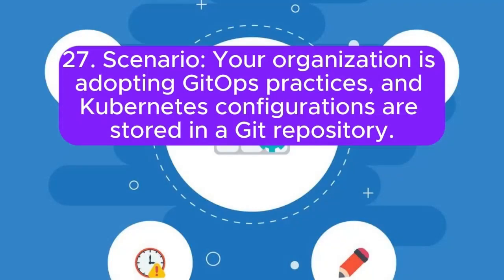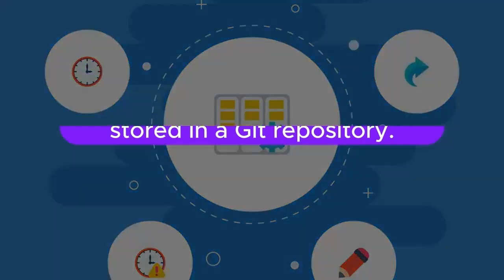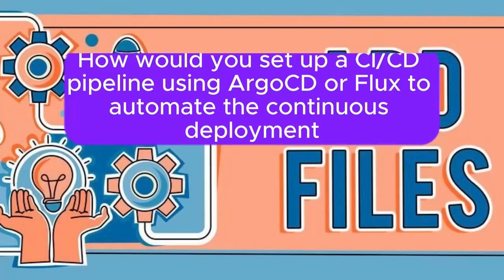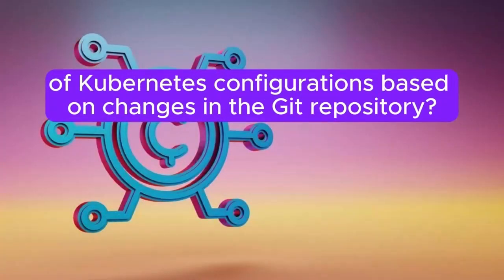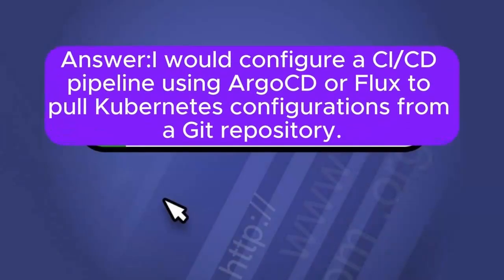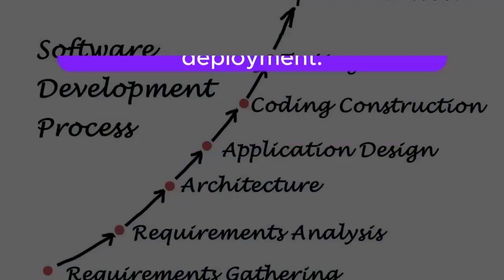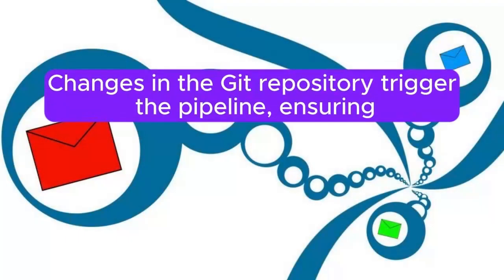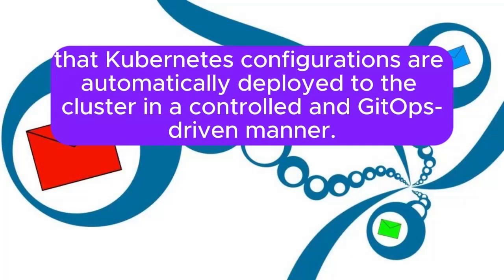Scenario 27: Your organization is adopting GitOps practices and Kubernetes configurations are stored in a Git repository. How would you set up a CI/CD pipeline using ArgoCD or Flux to automate the continuous deployment of Kubernetes configurations based on changes in the Git repository? Answer: I will configure a CI/CD pipeline using ArgoCD or Flux to pull Kubernetes configurations from a Git repository. The pipeline would include stages for testing, validation, and deployment. Changes in the Git repository trigger the pipeline, ensuring that Kubernetes configurations are automatically deployed to the cluster in a controlled and GitOps-driven manner.